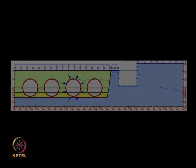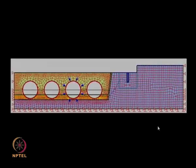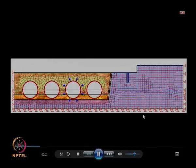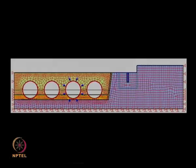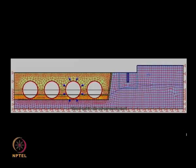In a third test case, a remedial measure using a filter layer (similar to those in earthen dams) was placed at a specific level. This filter layer maintains the water table at the bottom of the pipe, reducing external pressure and preventing loss of soil support. Without this measure, very high non-uniform stresses develop, leading to failure.